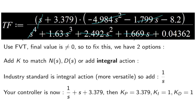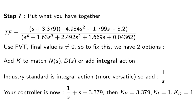We still have to fix the steady state error, which was a design requirement. Using the final value theorem, plugging s equals zero shows the final value is non-zero. One option is to add a gain to match numerator and denominator at s equals zero, but that's not ideal. The best approach is to add integral action — one over s — because that gives zero steady state error and is more versatile. Your controller becomes (1/s) times (s plus 3.379).